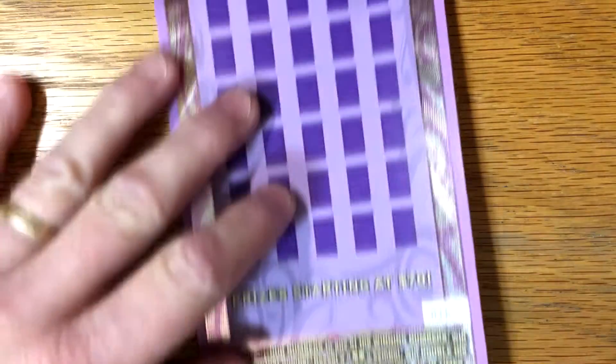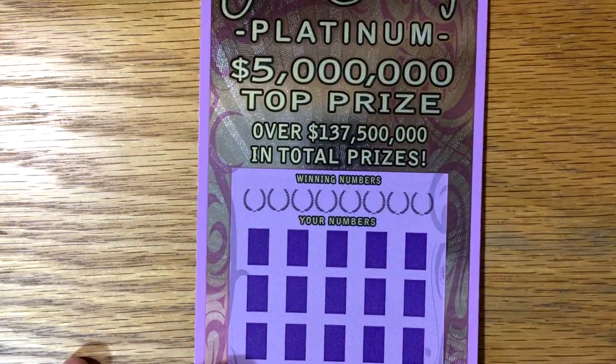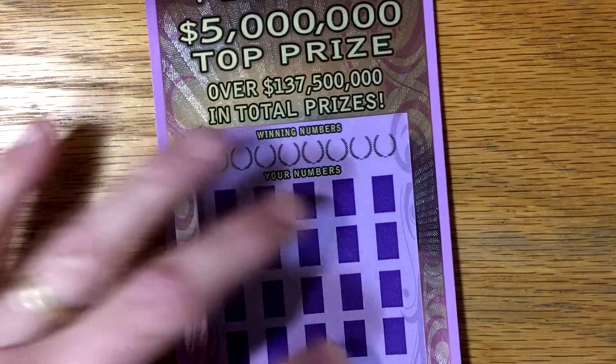It is ticket number 16. Gave him the choice between Ultimate Millions and Platinum, and he thought Platinum would be good, and I like this ticket too, so let's give it a shot.